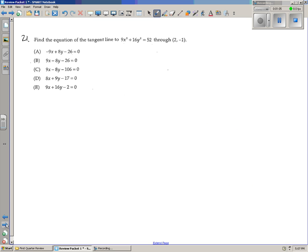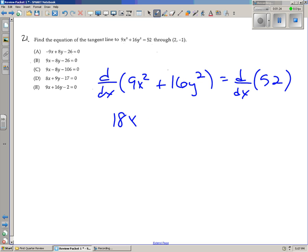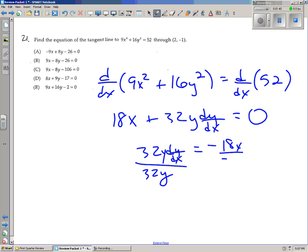Number 21, find the equation of the tangent line of that graph through 2 negative 1. Another implicit diff question. We get 18x plus 32y dy over dx equals 0.